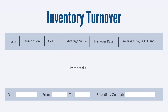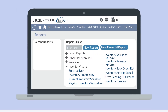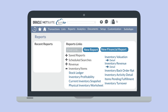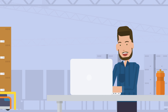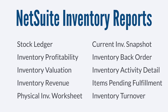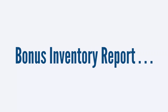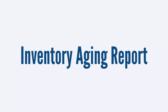Finally, the Inventory Turnover report, as the name suggests, displays the turnover of your inventory. This report comes with a list of your items, both the cost and average value of the items, the turnover rate, and the average days on hand for each item. With all these NetSuite inventory reports available to you, evaluating trends in your inventory and acting on those trends is incredibly simple. These are all the key inventory reports that NetSuite provides. But one important type of inventory report that NetSuite does not have is an inventory aging report.